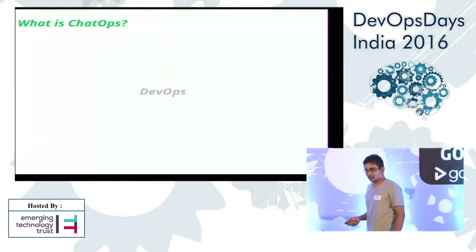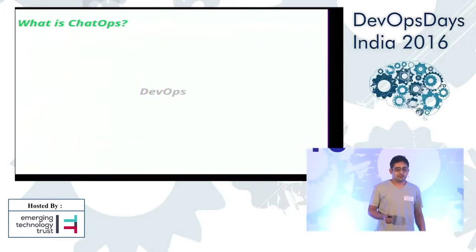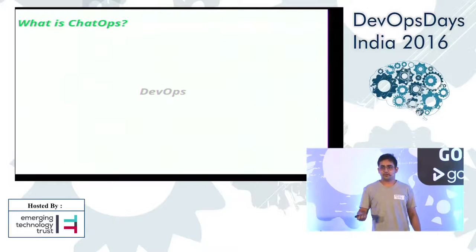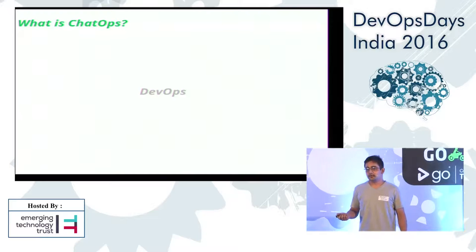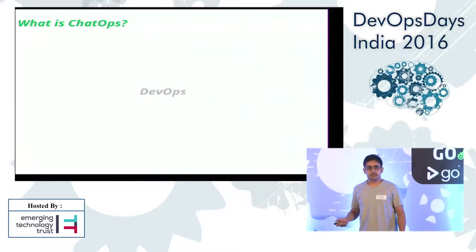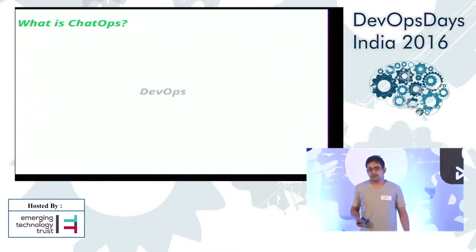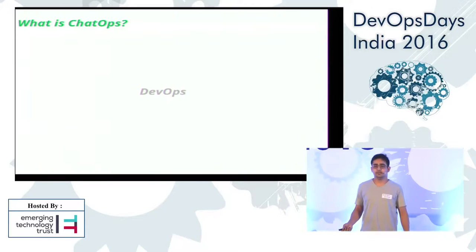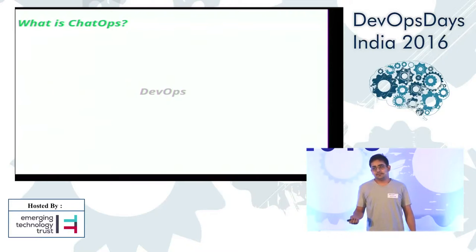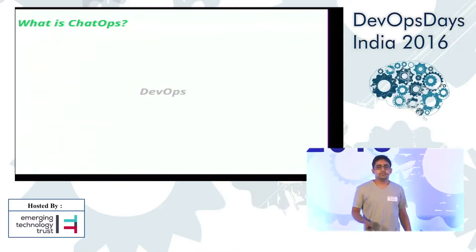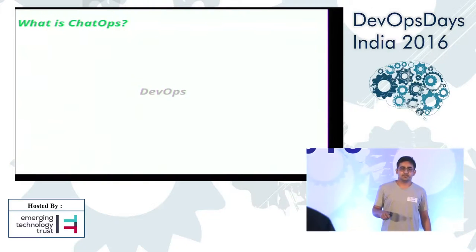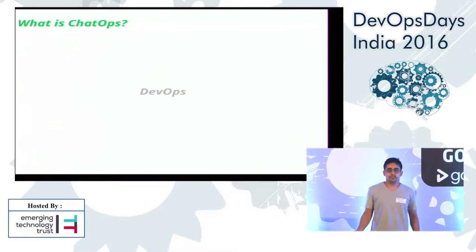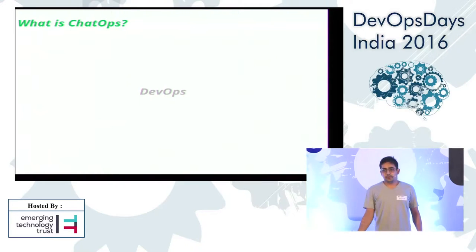I think everyone here knows about DevOps. So DevOps is like when we write code — we code, we build on some CI tool, we test it out, write some tests, we package them, we release them, we configure the VMs on which we have to deploy our software, and we monitor that. This is the overall lifecycle. DevOps is an intersection point of all these processes — an intersection of quality assurance, the development process, as well as the operations we do for deployments of our apps.